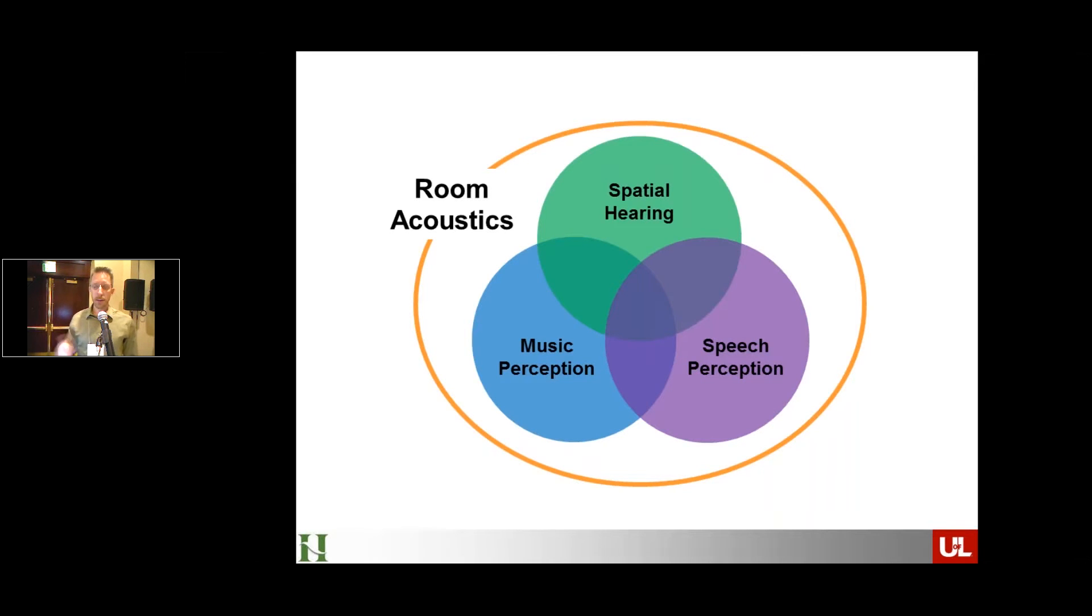So, for example, in a situation where we have the acoustics, say, of a worship space, those acoustics really need to be able to support some basic auditory functions, things such as understanding speech effectively, the perception of music, of course, that's a critical piece in worship spaces. And then another piece that you might not necessarily think about, but that is spatial hearing. We need to be able to attend to certain things in those spaces and know where they're coming from.